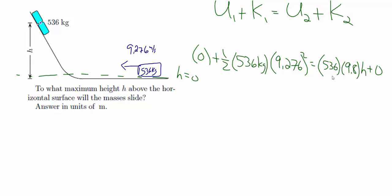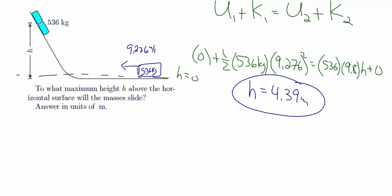That equals the final potential energy mgh. We know the mass and g, and we're solving for the height. The objects slide up and stop, so the final kinetic energy is zero. Solving this, we get the height at which they stop: 4.39 meters.